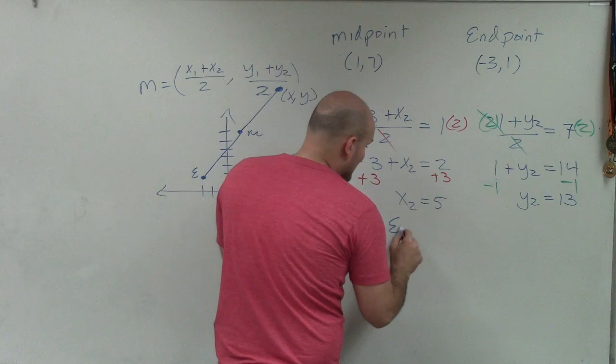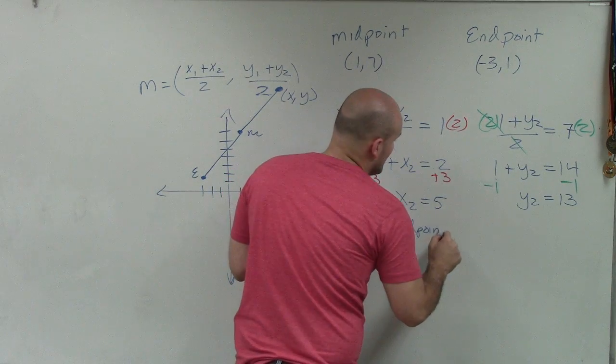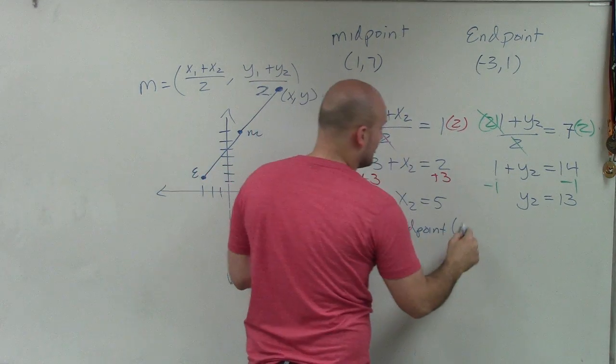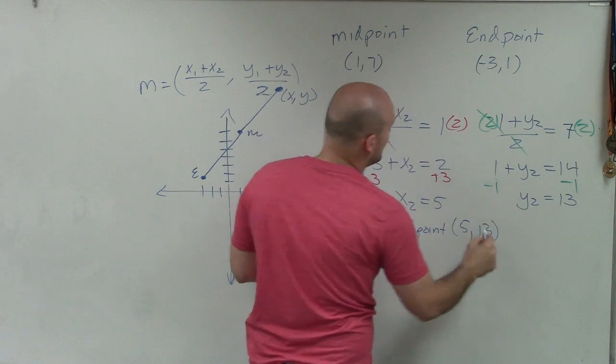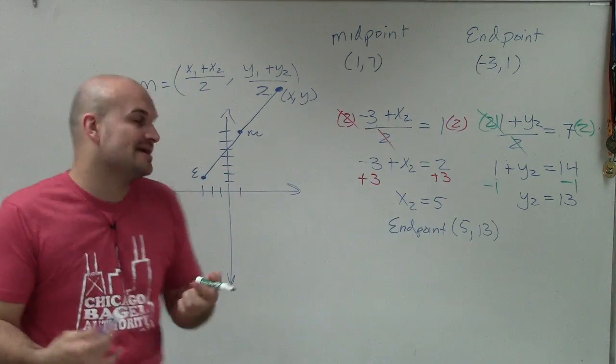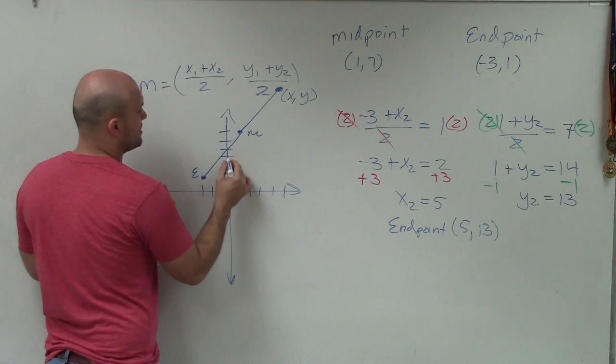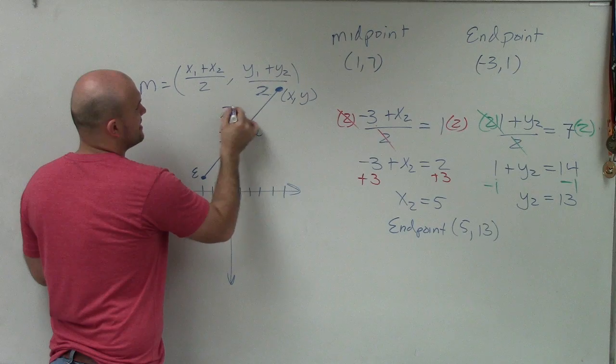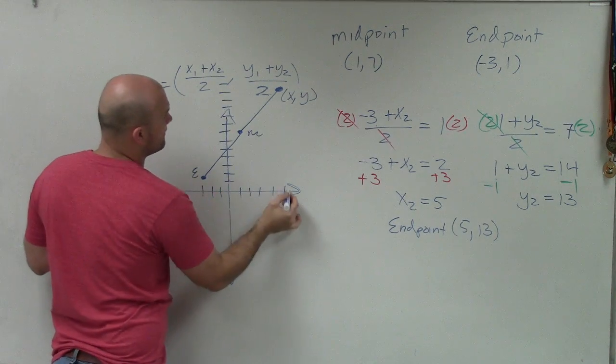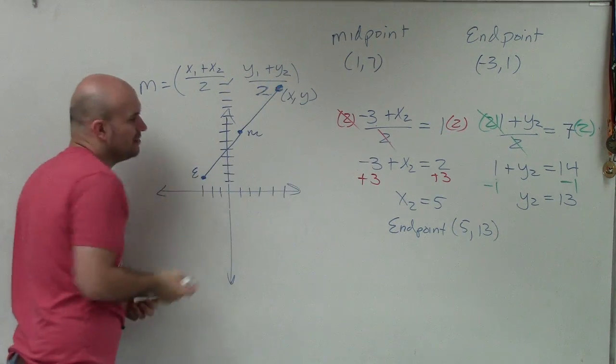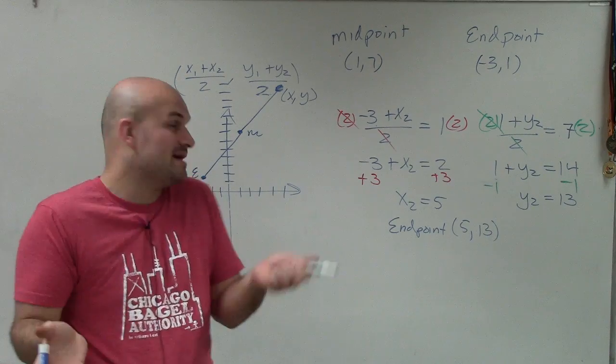So therefore, the endpoint, we already know one endpoint. Now, the new endpoint is 5 comma 13. And let's go and plot that point and see if it makes sense to my graph. 1, 2, 3, 4, 5, up 13. 1, 2, 3, 4, 5, 6, 7, 8, 9, 10, 11, 12, 13. So over 5, up 13. And yeah, I'm a little off on my graph. But you can see that, yes, that makes sense.